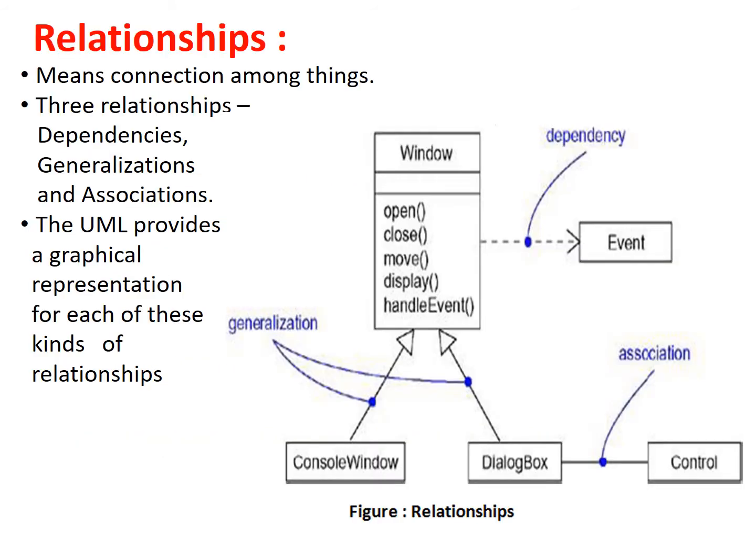A relationship is a connection among things. In object-oriented modeling, different types of relationships are there: dependencies, generalizations, and associations. The UML provides a graphical representation for each of these kinds of relationships.